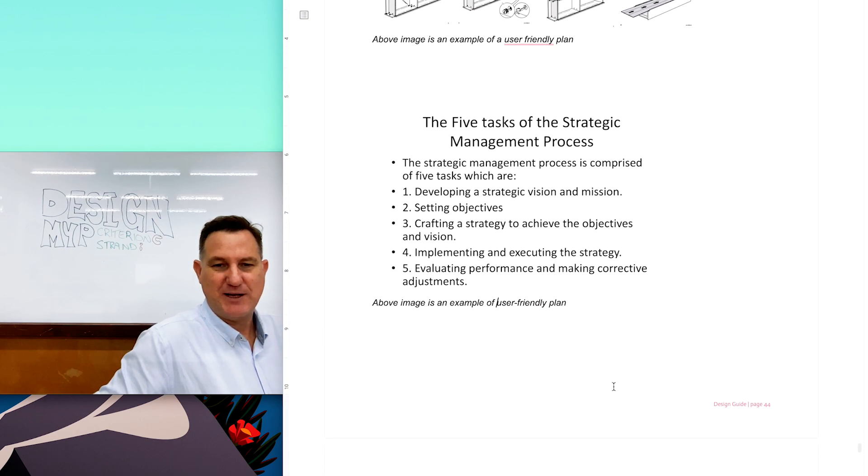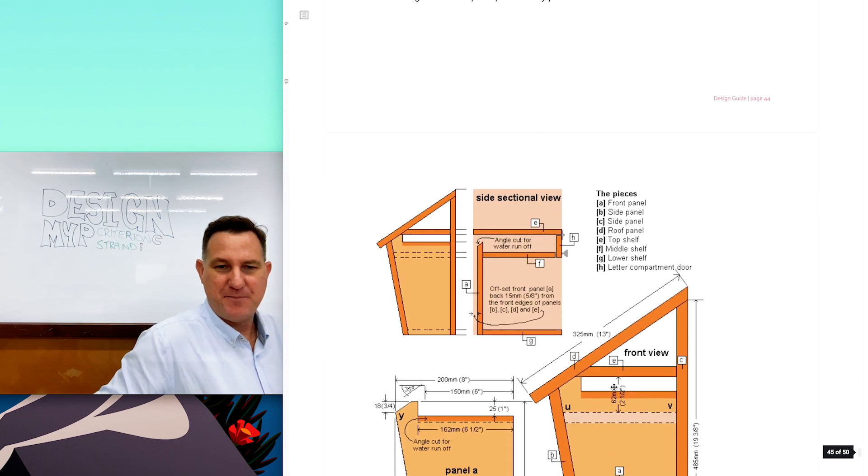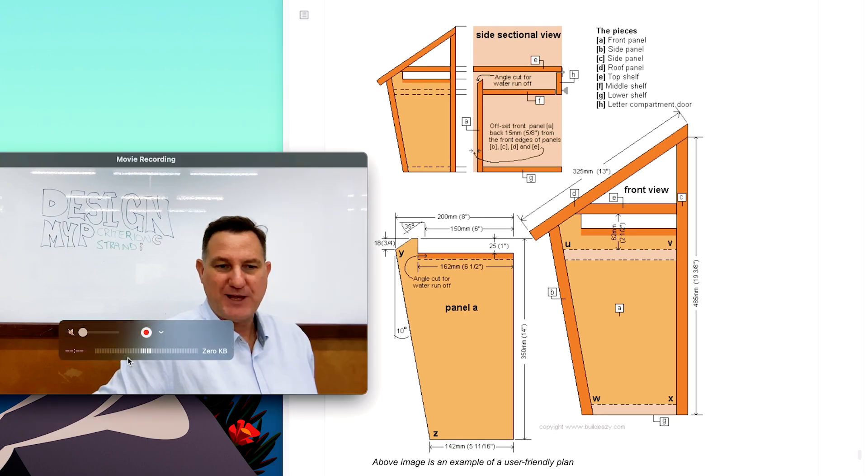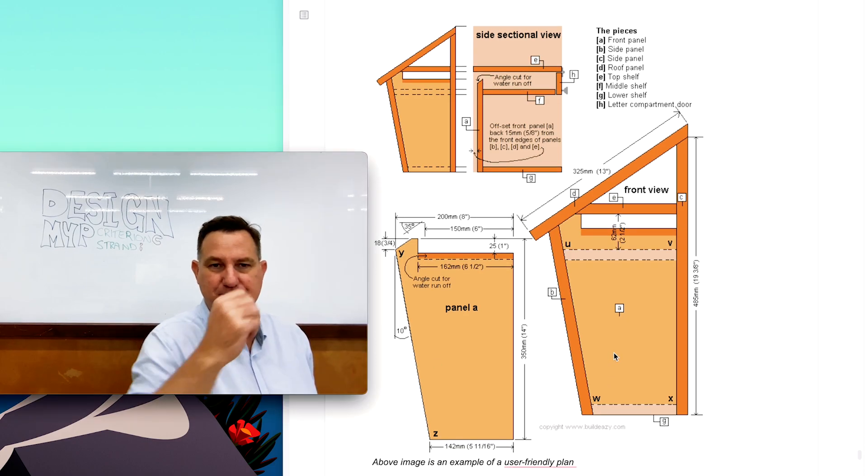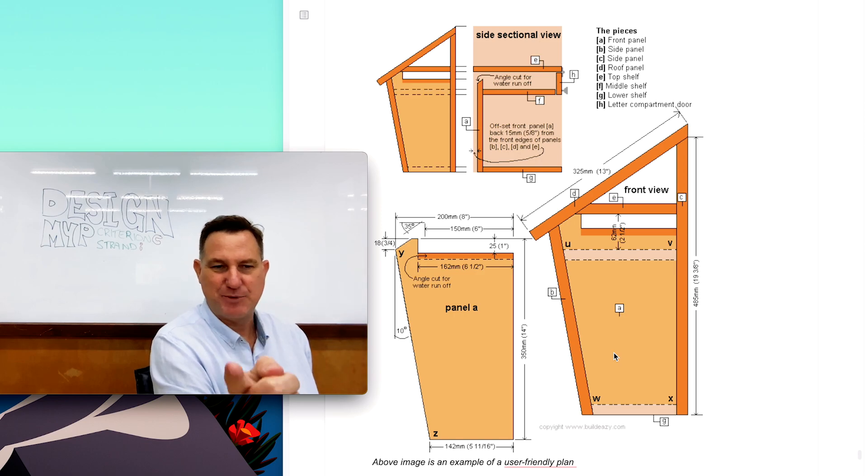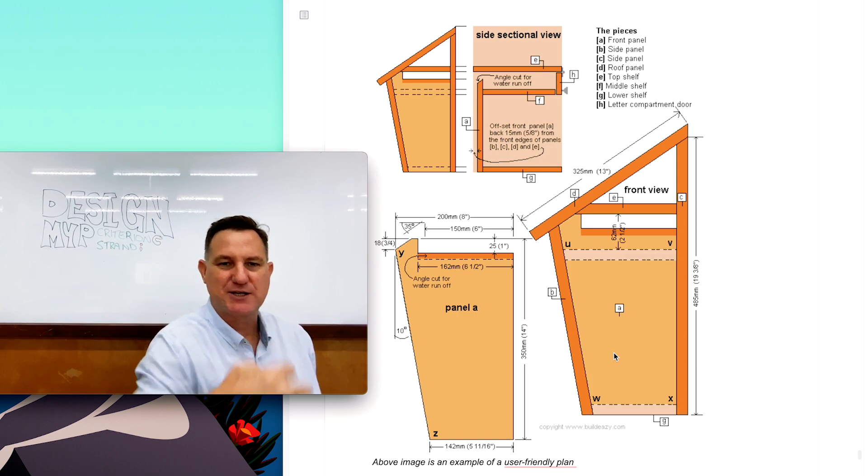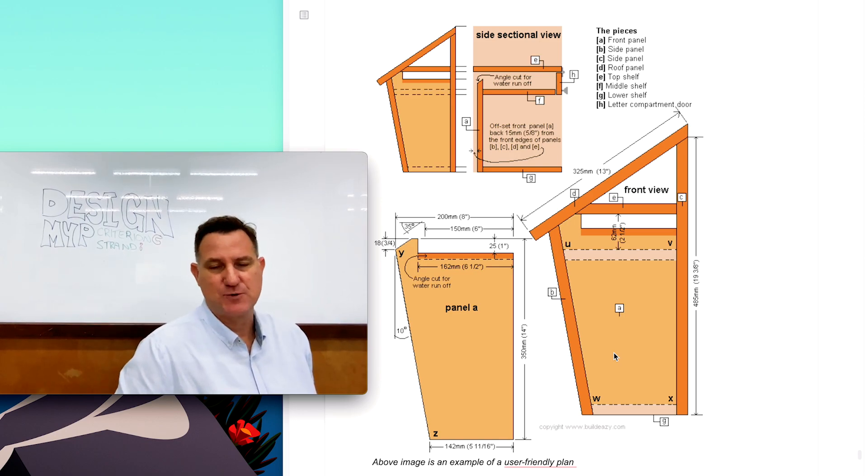And here's another example of a plan. So this is a letterbox. I just found this online. If you look at that letterbox, anyone could look at that and work out what they actually need. It talks about measurements. It's very detailed with the measurements. It's got the pieces as well. So you could think about something like that, how to construct something. Or this might be just one piece of your plan. You might have some written instructions as well.